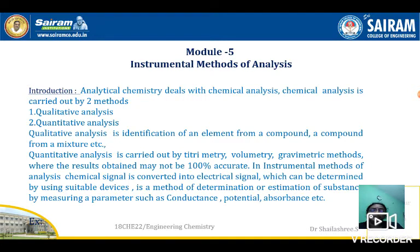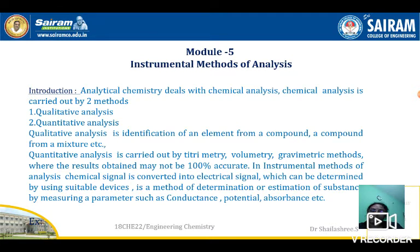In instrumental methods of analysis, whatever chemical signal is taking place is converted into an electrical signal, which can be measured by suitable devices. In potentiometry, we measure the potential during a redox titration using a potentiometer. In conductance measurement, we use a conductometer. Values are plotted graphically, giving 100 percent accurate results with no error. Examples include potentiometric estimation, conductance, and colorimetric estimation.